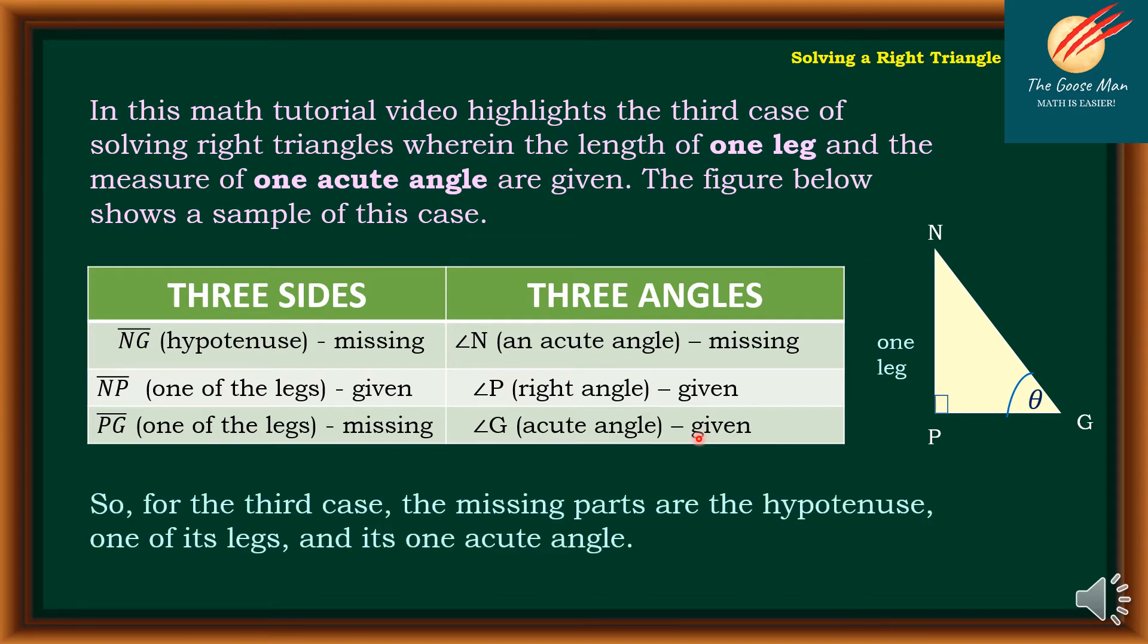For the third case, the missing parts are the hypotenuse, one of its legs, and its acute angle.